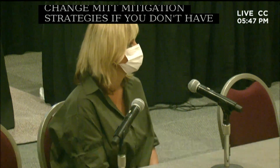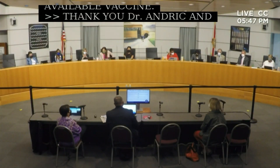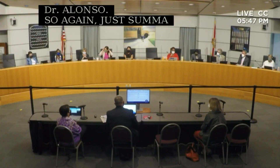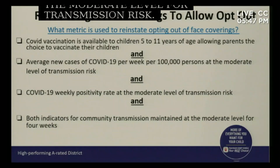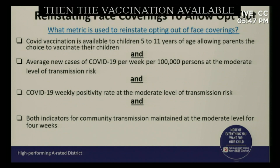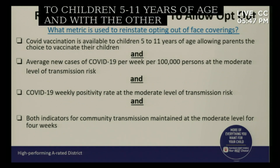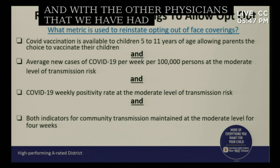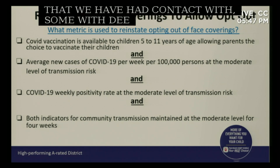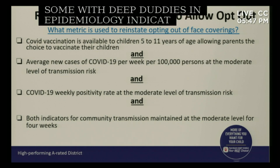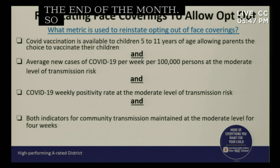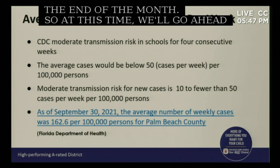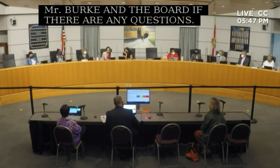Thank you, Dr. Andrick and Dr. Alonzo. Summarizing, these four indicators need to be at the moderate level for transmission risk for over a four-week period, and vaccination needs to be available to children five to eleven years of age. The physicians we've consulted, including those with deep expertise in epidemiology, indicate the data shows hopeful approval at the end of the month. We'll turn it back to Mr. Burke and the board for any questions.